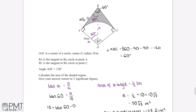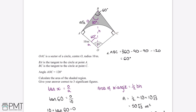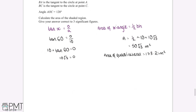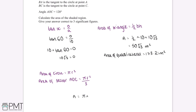The next part of this question is working out the area of the sector. There are 360 degrees in a full circle, but this angle is 120 degrees, so the sector is exactly a third of a full circle. If we divide the formula for the area of a circle by 3, this gives us the area of the sector. The area of a circle is πr², so the area of sector AOC equals π × 10² divided by 3, which gives us 104.72 metres squared.